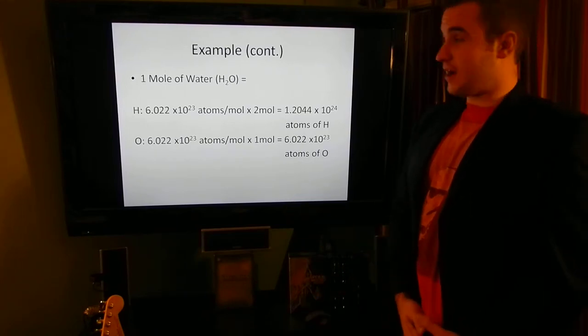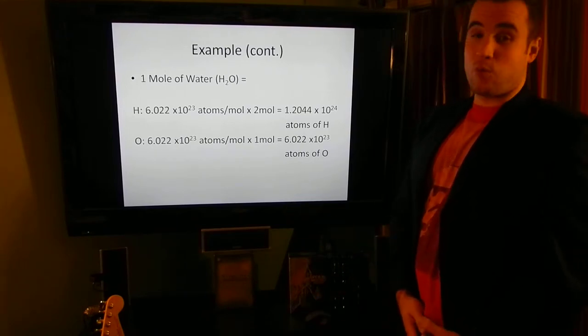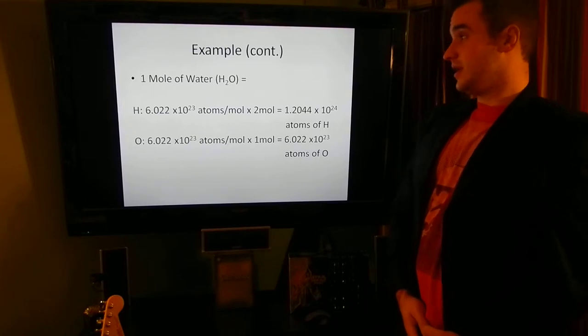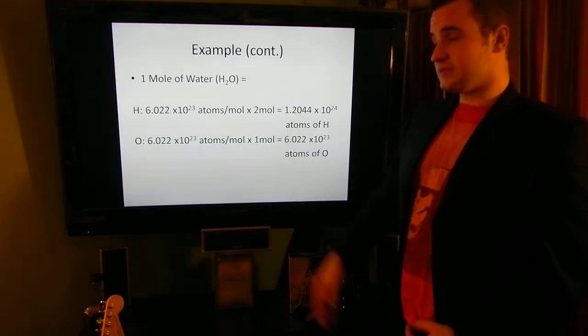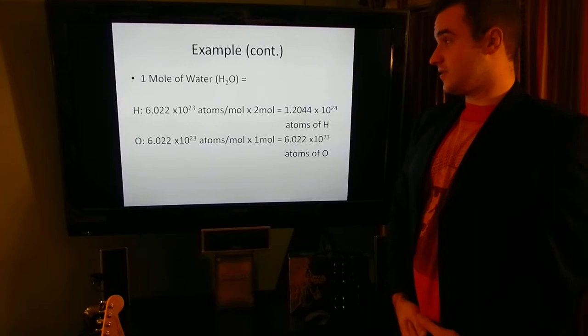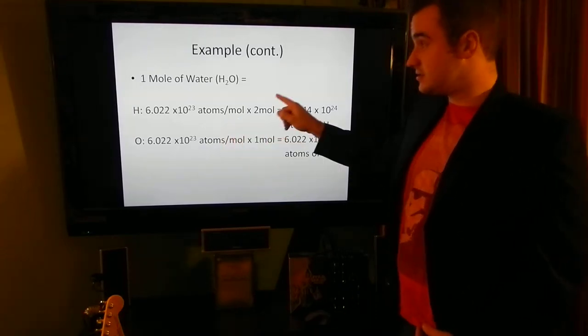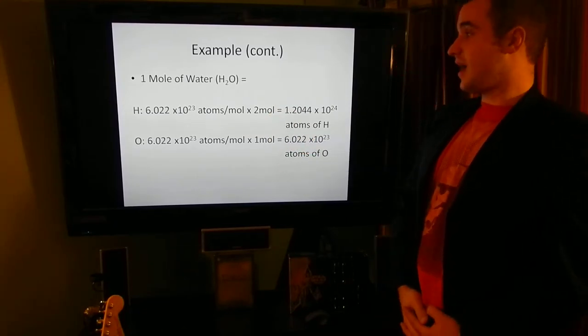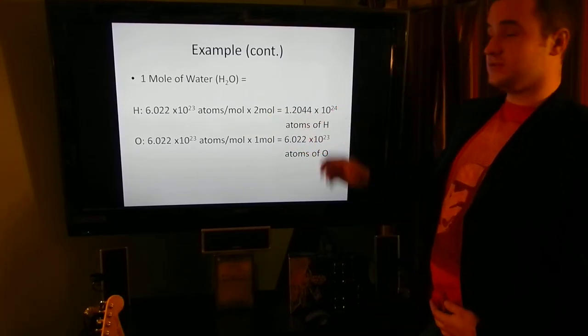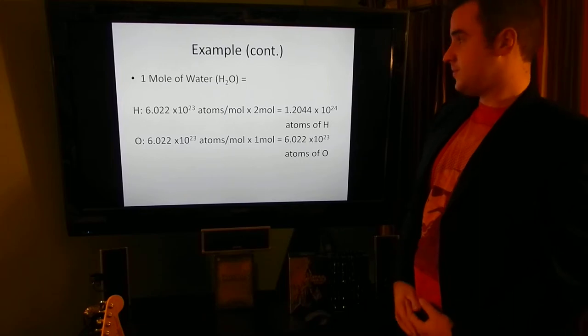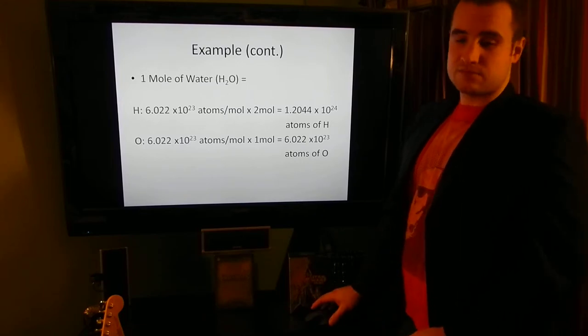Also, we know from Avogadro's number that if you had one mole of water, you would have 6.022 times 10 to the 23rd atoms of oxygen, and you'd have 6.022 times 10 to the 23rd times 2 molecules of hydrogen, which is 1.2 times 10 to the 24th. Not really important, but good to know.